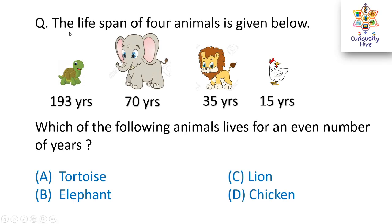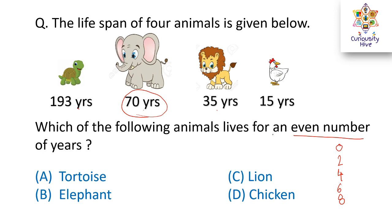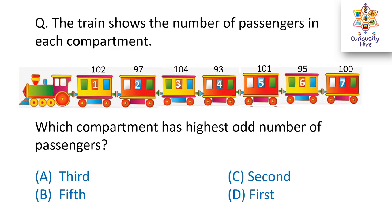Our first question: the lifespan of four animals is given. Which of the following animals lives for an even number of years? As we discussed, even numbers are those ending in 0, 2, 4, 6, and 8. Of the given options, 70 is an even number. Hence the right answer — which animal lives for an even number of years — is option B: Elephant.